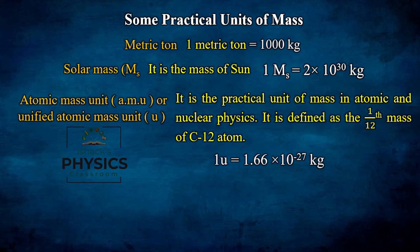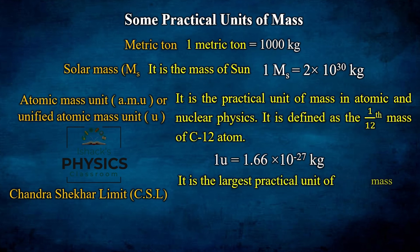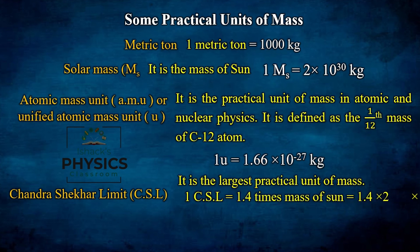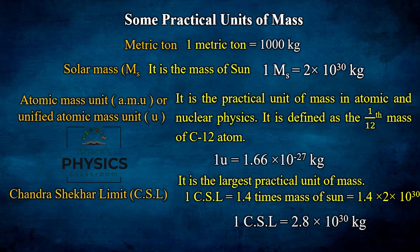The Chandrasekhar limit (CSL) is the largest practical unit of mass. It is equal to 1.4 times the mass of the Sun, that is 1.4 × 2 × 10³⁰ = 2.8 × 10³⁰ kilograms. This limit is significant in astrophysics: stars at the end of their life that exceed this mass can collapse into black holes.